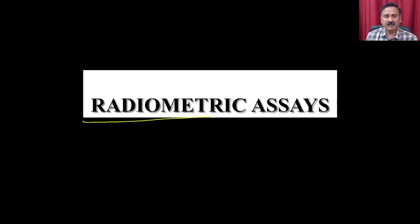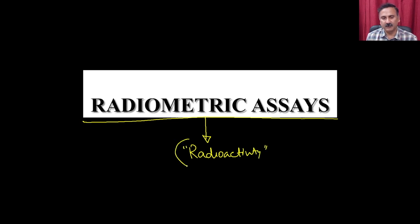Let us start discussing about the radiometric assays. As the name suggests, radiometric assays are assays where you are actually going to use radioactivity as the monitoring substance. Just like in photometric assays we discussed absorption and excitation phenomena, in radiometric assays you are actually going to measure the radioactive counts.